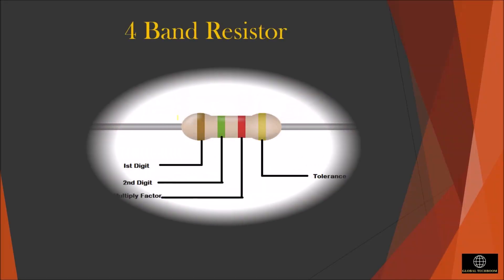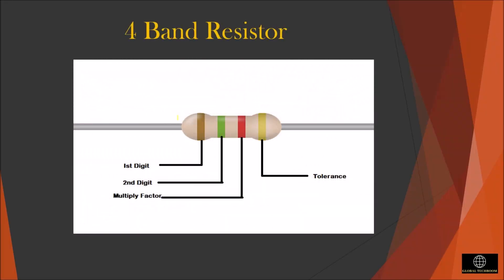A four band resistor is a resistor having four color bands. The first two colors represent the first two digits of the value. The third color represents the number of zeros to be added.